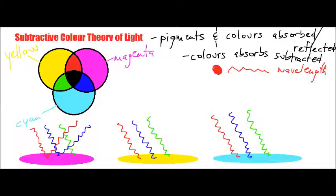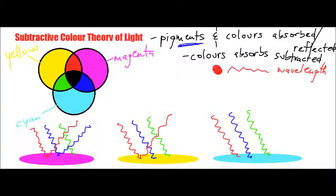Now let's look at the yellow object. We have the same three primary colors according to the additive theory hitting this pigment. This pigment is yellow. What allowed us to create yellow is green and red. So red gets reflected as well as green — because if only red was reflected we would see only red. But the fact that this object is yellow means that red and green are the wavelengths that actually get reflected by this object.